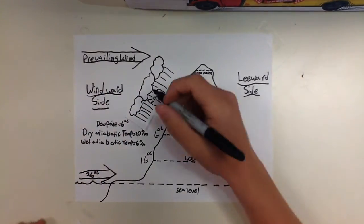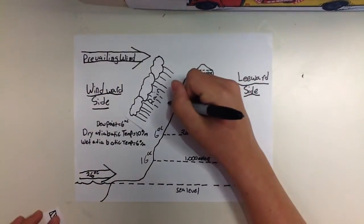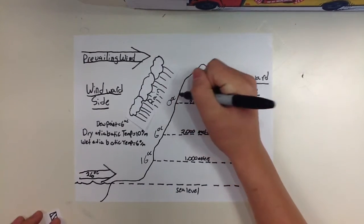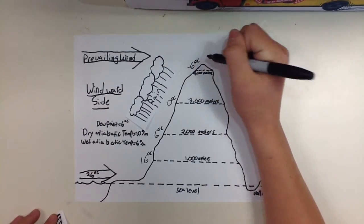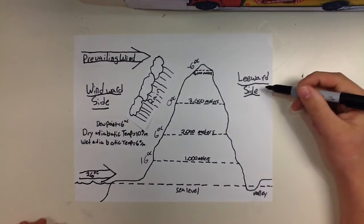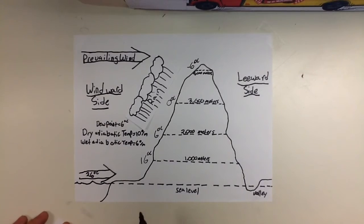We now go up by subtracting 6 each time, so 0 degrees Celsius minus 6 once again would be negative 6 degrees Celsius. Now that we're on the leeward side of the mountain, we are adding 10 degrees every thousand meters.